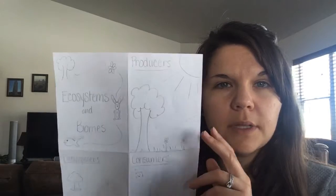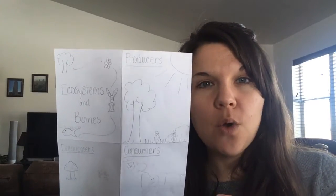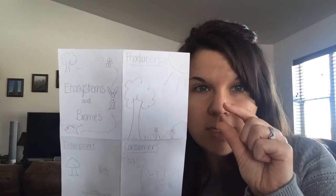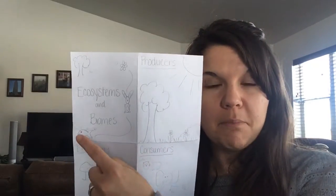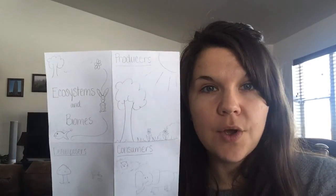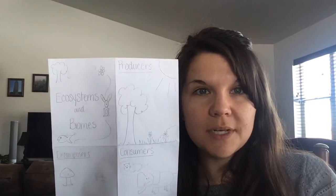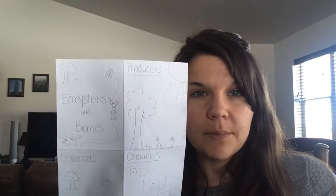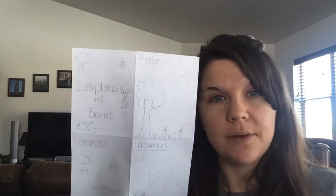Ecosystems are places where all the organisms — all the living things — work together to stay alive, and that could be something as small as a puddle and as large as the ocean. Biomes is the name given by scientists who looked out around the world and said, in these places similar plants grow and similar animals live, so let's give them all a name — and that's where biomes come from.